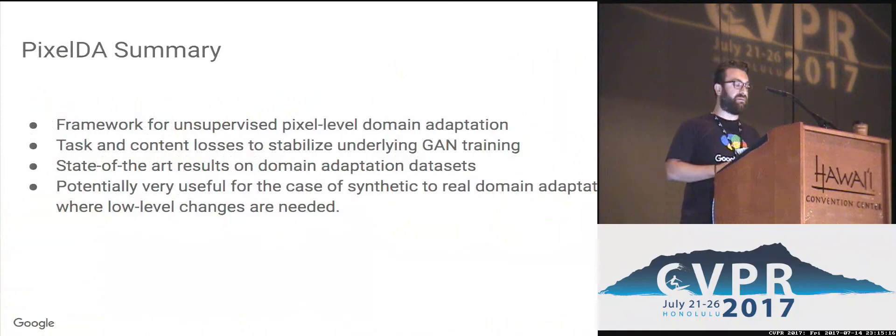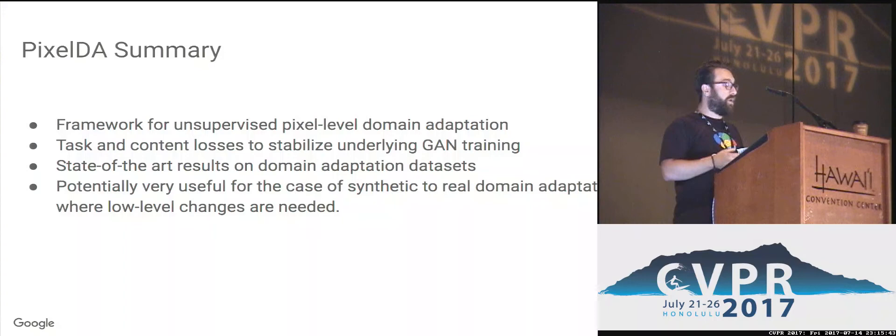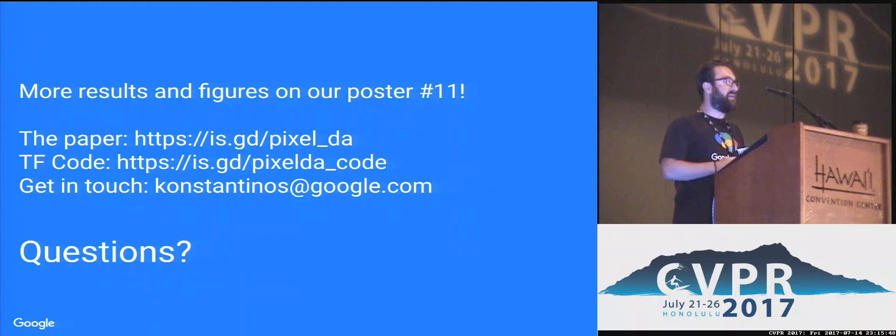To summarize: PixelDA is a framework for unsupervised pixel-level domain adaptation. We use task-specific and content-specific losses to stabilize the underlying GAN model. PixelDA provides state-of-the-art results on various domain adaptation datasets, and we believe it is particularly useful for synthetic-to-real domain adaptation where low-level pixel-level changes are needed. Please come to our poster number 11 for more results and figures. We also just released our TensorFlow implementation, available at the link provided.